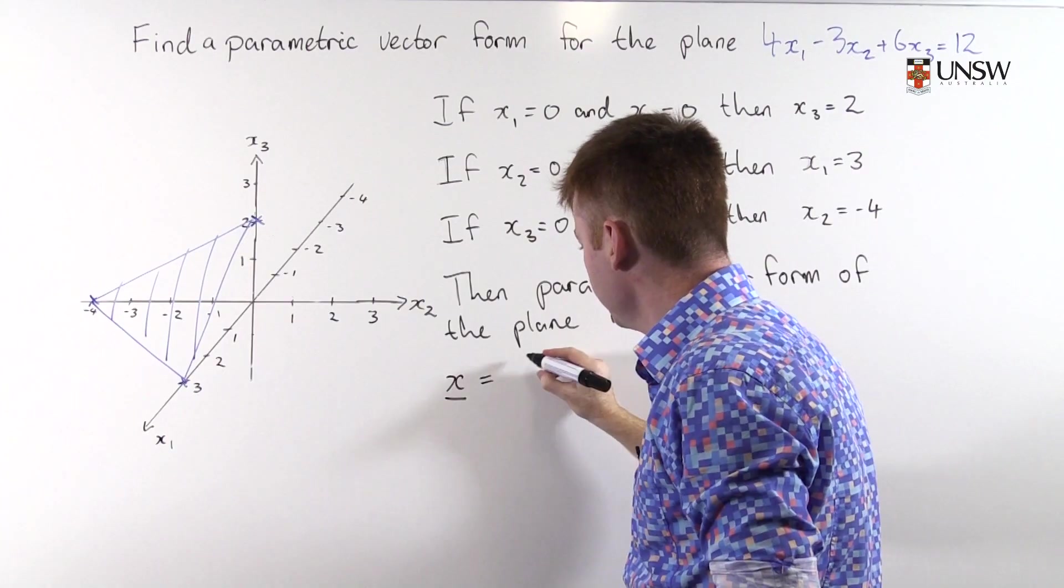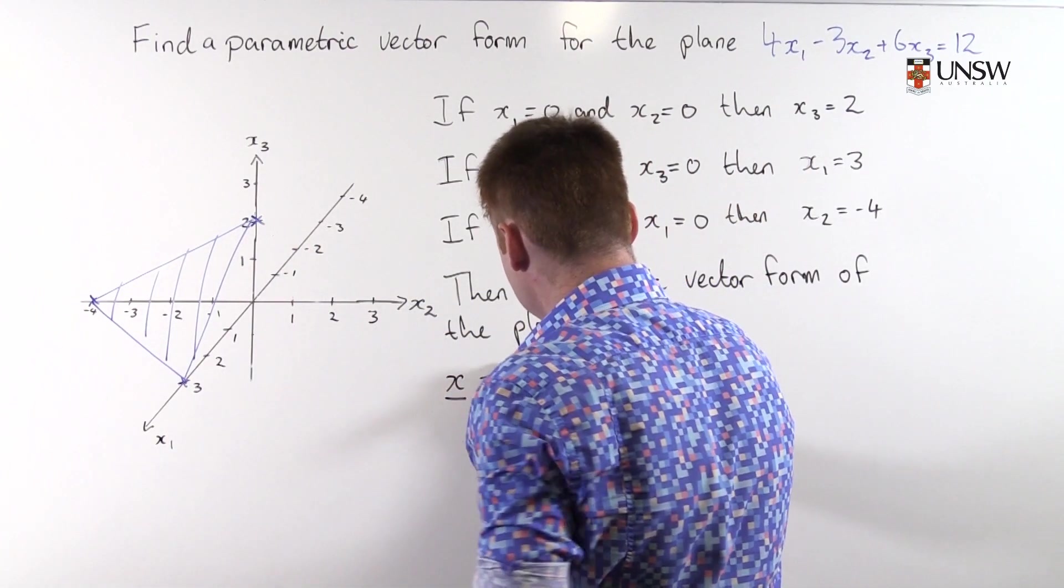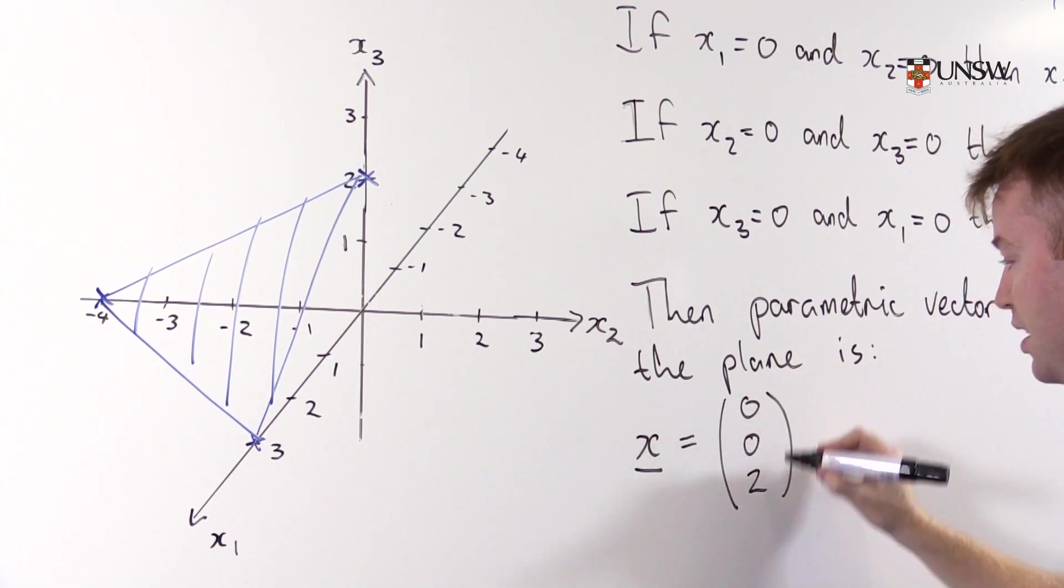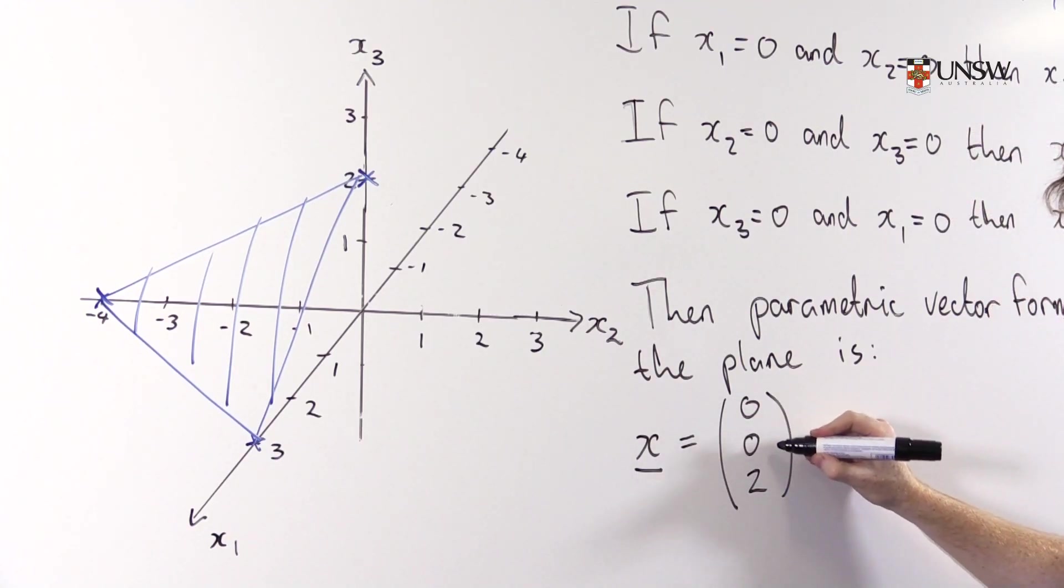Let's choose this one with (0, 0, 2). So that's x₁ coordinate 0, x₂ coordinate 0, x₃ coordinate 2. And then we need to choose two vectors that are parallel to the plane.